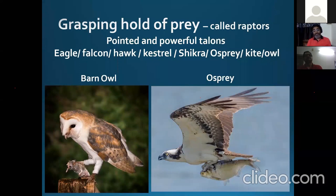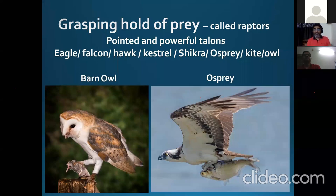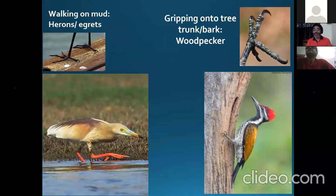Raptors — birds of prey — have very powerful talons, meaning nails, and they can catch anything. Owls are experts in catching rats and mice in the night. The osprey is expert in catching fish — just imagine catching a live fish with your feet while it's in the water! That's the mechanism of these powerful talons. All the raptors we mentioned — eagles, falcons, hawks, kites, and owls — have hooked beaks and such powerful talons. Herons and egrets walk in mud with slightly longer toes, but they also perch in trees.